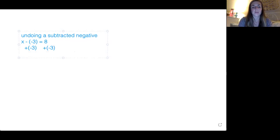Once we do that, we're going to have just X by itself on the left and eight plus negative three is going to be five. Okay. So our answer would be X equals five.